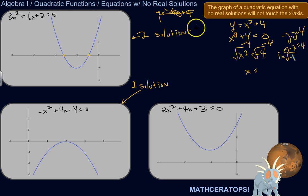But this equation would have no real solution. You could have an imaginary number solution, but there's no real solution. So that's an example of a quadratic equation with no solution.